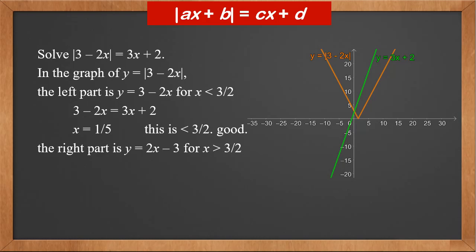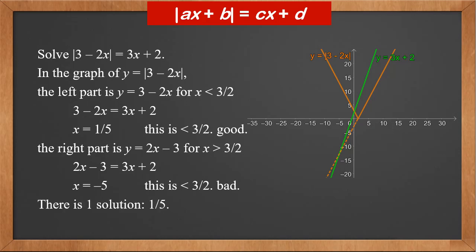The right part is two x minus three for x greater than three over two. So two x minus three equals three x plus two. Therefore, x is minus five. It is less than three over two, so it's not a valid solution. Looking at the graph, we can see the two lines y equals two x minus three and y equals three x plus two meet below the x-axis. The modulus function only has the positive half, so the intersection is not valid. Therefore, there is only one solution: x is one-fifth.